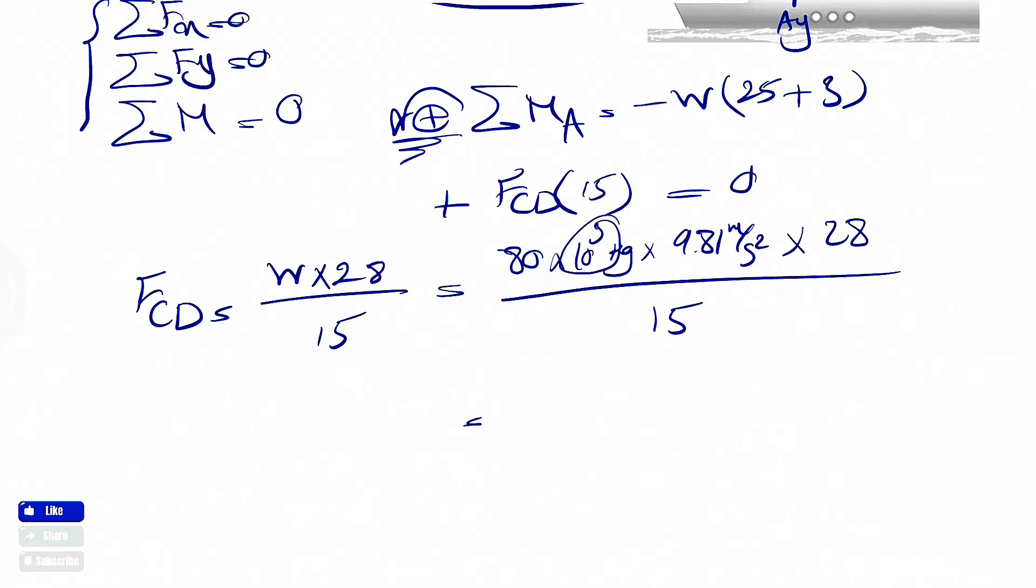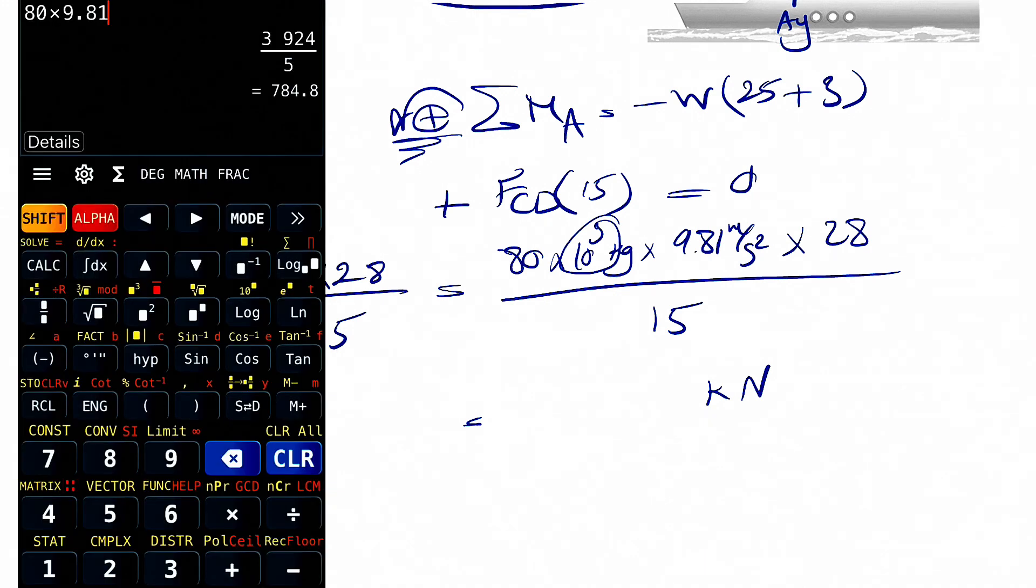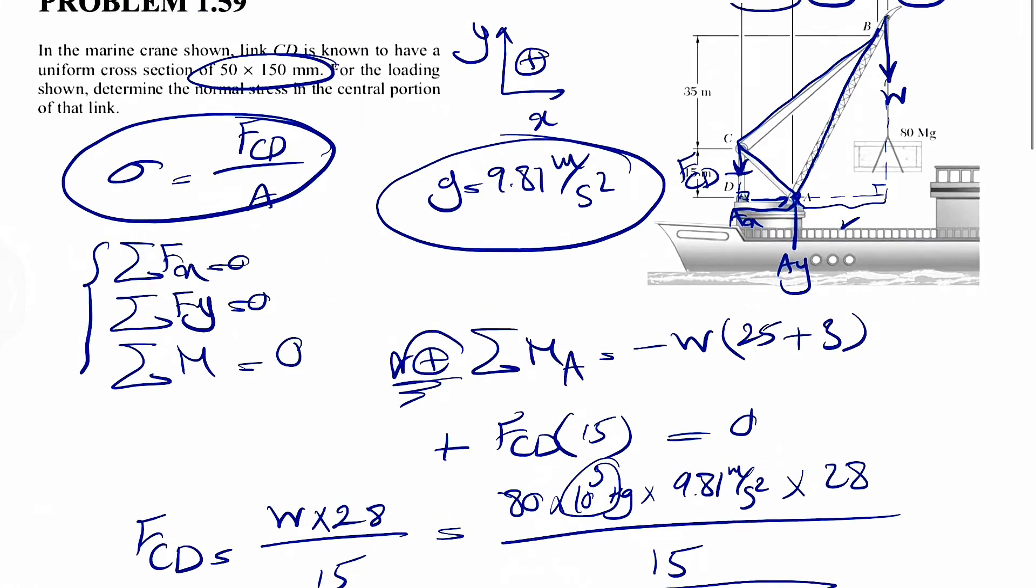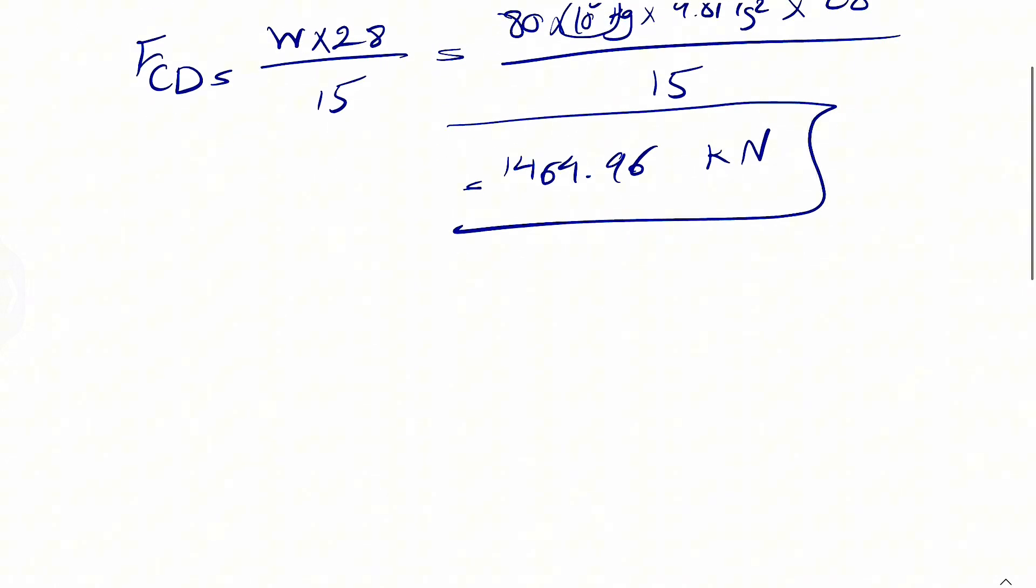So 28 divided by 15. And actually, we can keep this 1000 to have the force at the end in kilonewton. So just have to multiply 80 by 9.81 times 28 divided by 15. This is going to give us 1464.96 kilonewtons. And if we want to get back to our normal stress, we found F_CD.